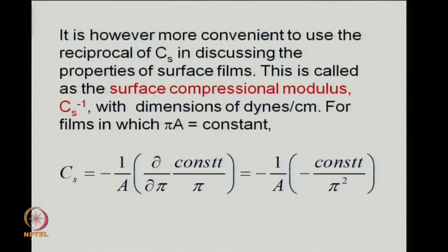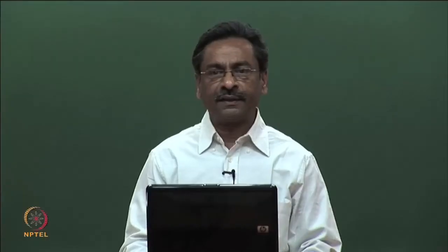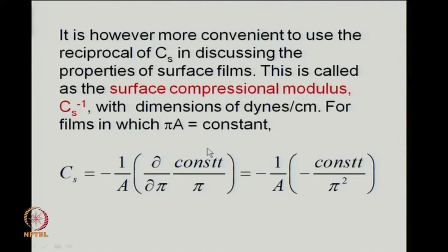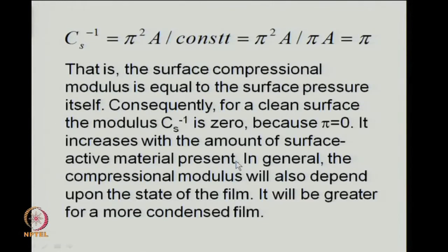It is the inverse of this compressibility which is more convenient in practice, and it has the same dimensions as surface pressure. In the limiting ideal case where π is constant, C_s would be calculated by expressing A as a constant divided by π. Upon completing the differentiation, we find C_s equals 1/π, or equivalently, C_s inverse equals π.